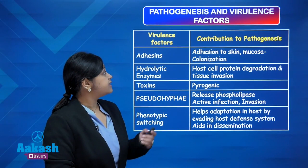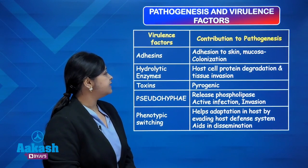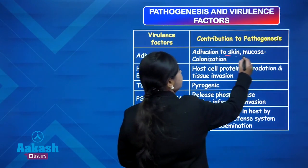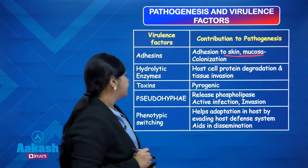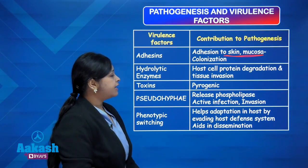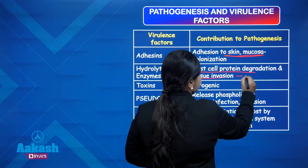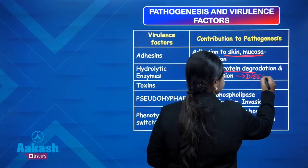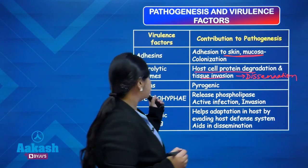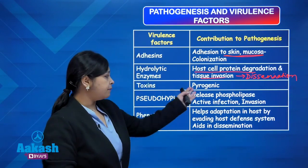Let us see the pathogenesis and virulence factors of Candida which help it to establish infection. First are the adhesins — these help Candida adhere to the skin and mucosa to establish infection. The Candida species also release a number of hydrolytic enzymes which help in host cell protein degradation, tissue invasion, and dissemination. Next are the toxins, which are similar to bacterial toxins produced by Candida species and are pyrogenic.